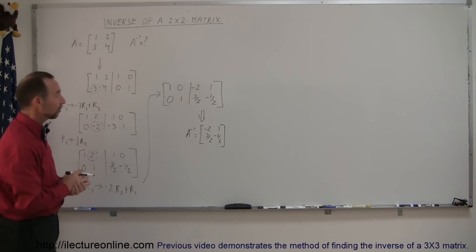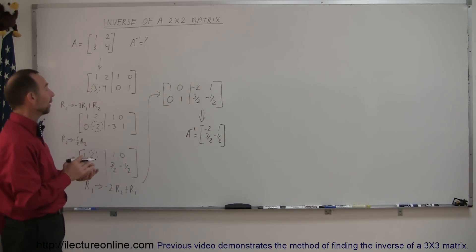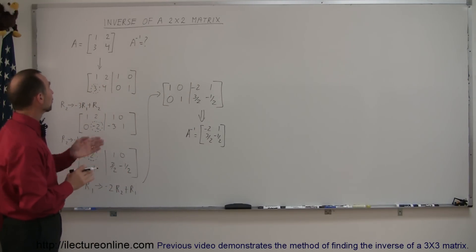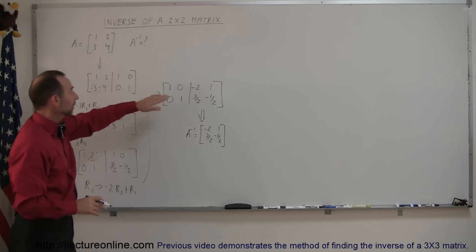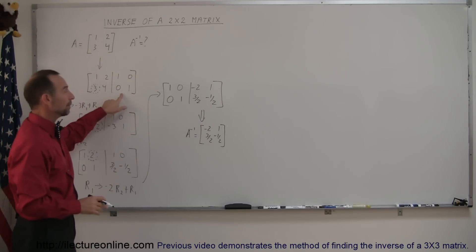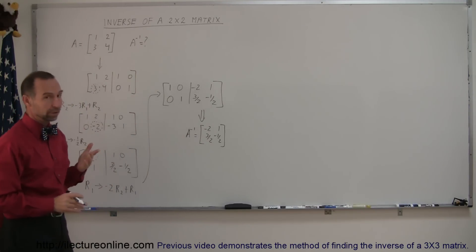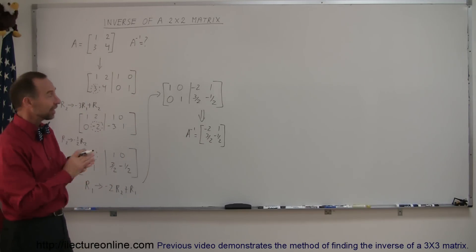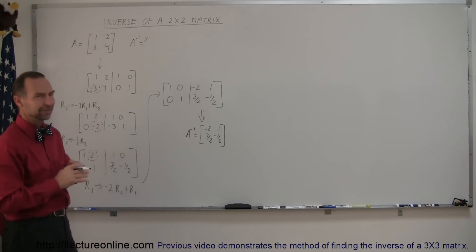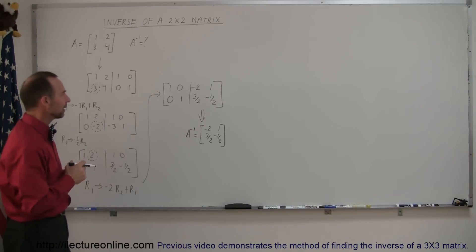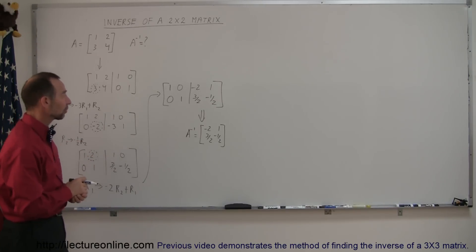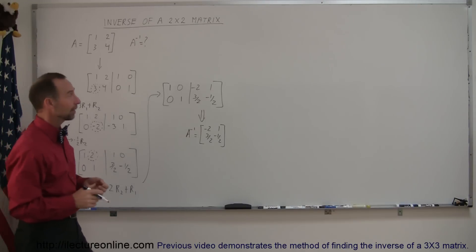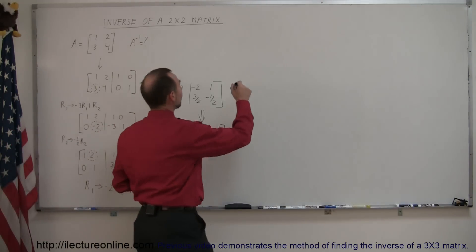To verify, we could multiply the original matrix times the inverse and confirm we get the identity matrix. There's also a second method — a quick, slick way to find the inverse of a 2x2 matrix. Let's use that.